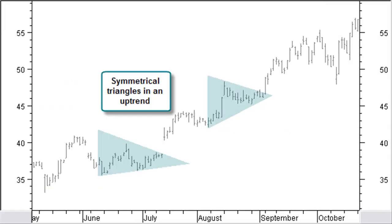Symmetrical triangles in an uptrend are created with higher bottoms and lower tops. A breakout in the direction of the previous trend confirms the continuation pattern. The duration of a triangle continuation pattern on a daily chart should be a minimum of about 20 days.